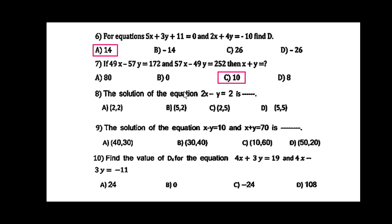The solution of the equation 2x - y = 2: the first option A has (2, 2). If you put 2 here, 2 × 2 = 4, minus y's value is also 2, and 4 - 2 = 2. So the valid solution is (2, 2). The solution of the equations x - y = 10 and x + y = 70 leads to x = 40 and y = 30.